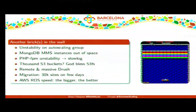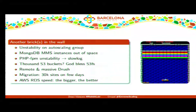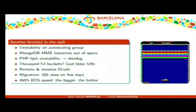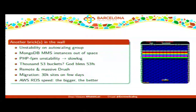For S3, our first approach was to create one S3 bucket per site. With 30,000 sites, that means 30,000 buckets — but Amazon only allows 100 buckets. That was a big problem. The S3FS Drupal module saved us: it lets you configure a single bucket for all sites, where each site gets its own directory inside that bucket, and the directories are isolated from each other.